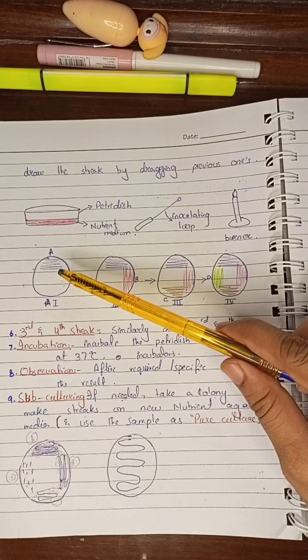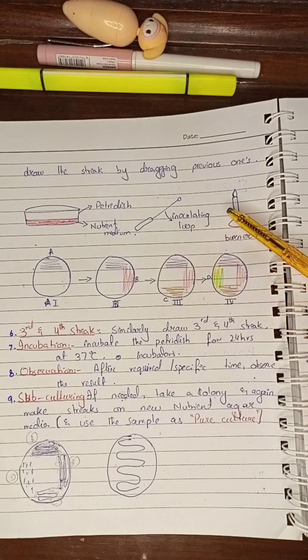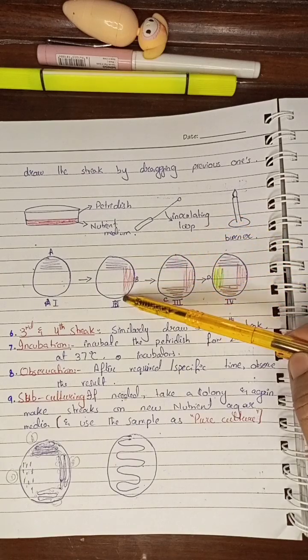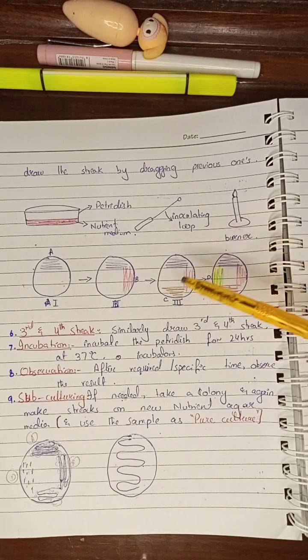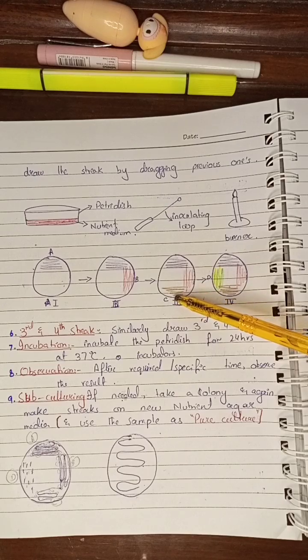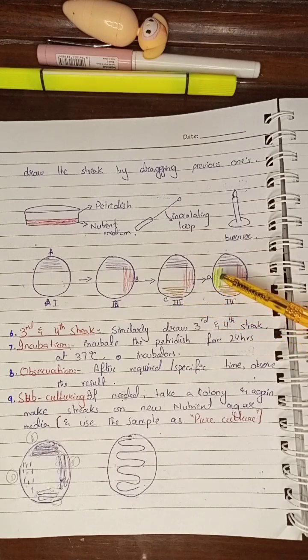First of all, make a streak in the first quarter, then sterilize the loop again and make a streak in the second quarter. Again sterilize it and make the streak in the third quarter, and finally in the fourth portion.